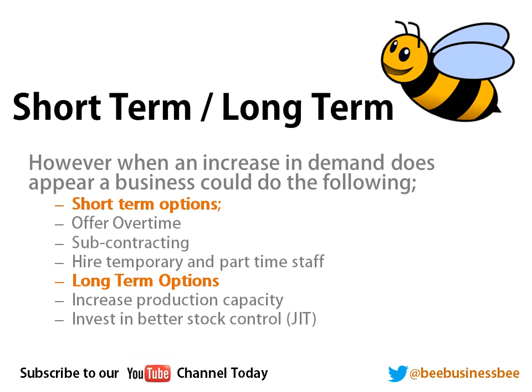In the longer term, you could look to increase your production capacity by building a new factory, investing in capital-intensive production such as machinery, or implementing better stock control through a just-in-time (JIT) system — though these are expensive, longer-term investments.